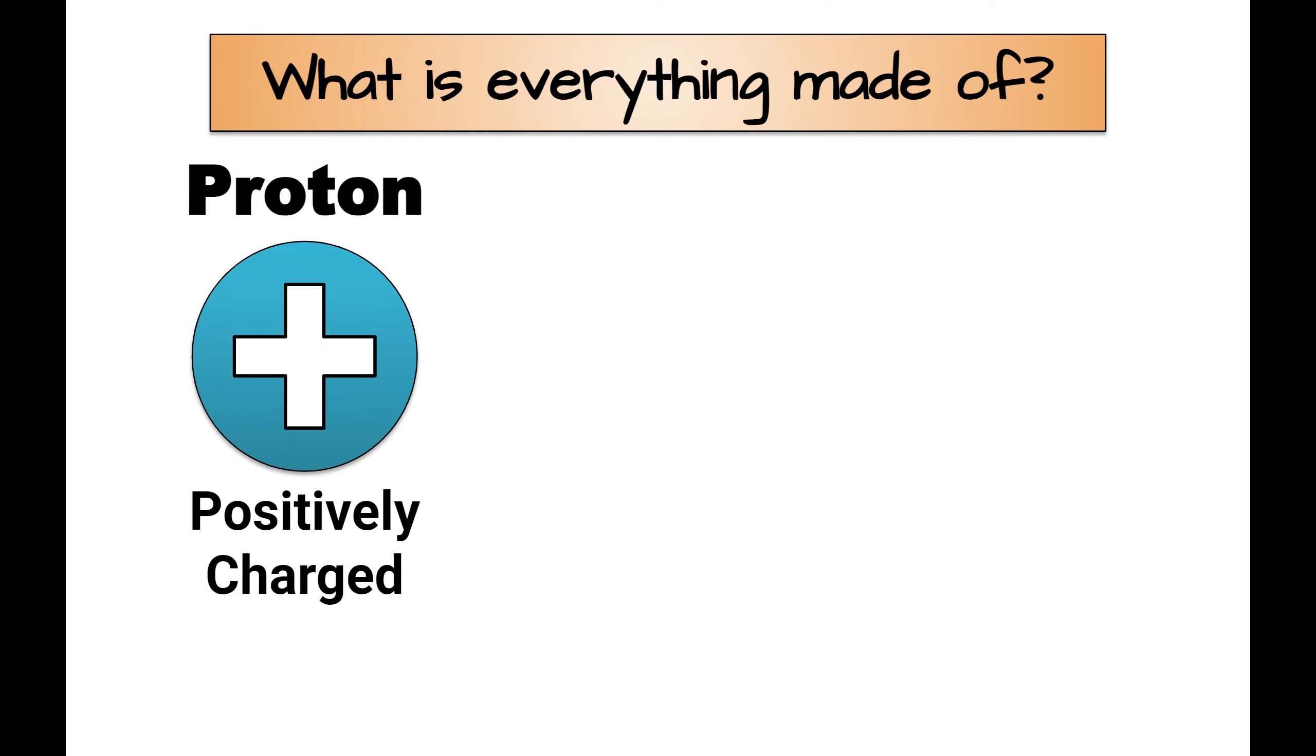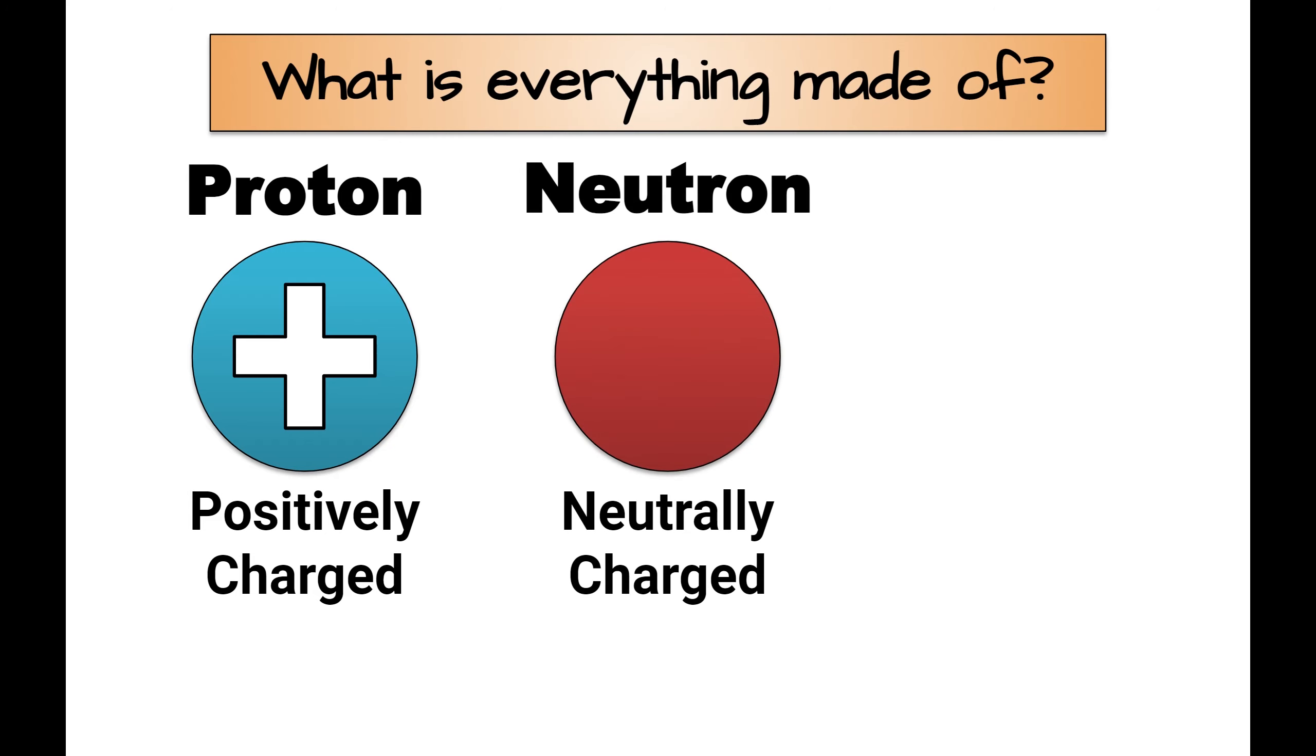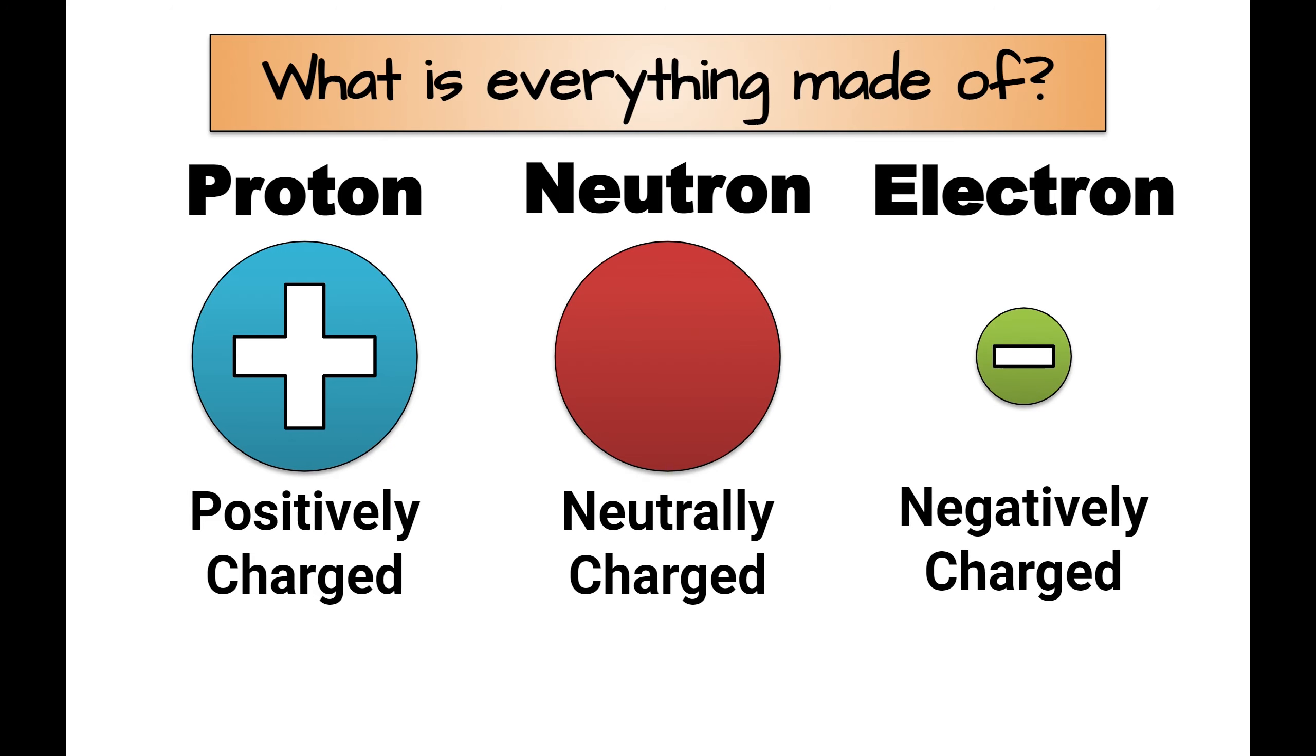Everything is made out of protons, which are positively charged, neutrons, which are neutrally charged, and electrons, which are negatively charged. These are typically referred to as the elementary particles, elementary meaning basic, and it means these are the smallest things that exist. Now, there are actually smaller things that we discovered after discovering the proton, neutron, and electron. Those are called quarks, but we're not going to talk about those today. You've learned about those in a more advanced class.